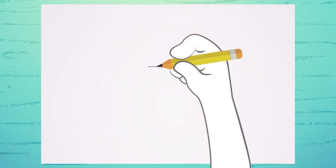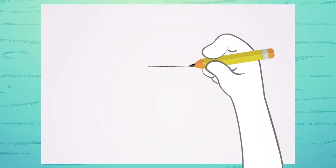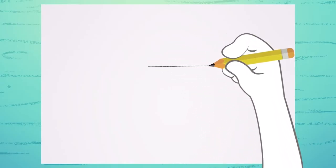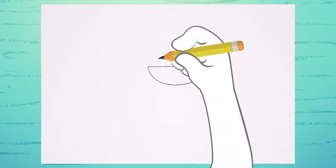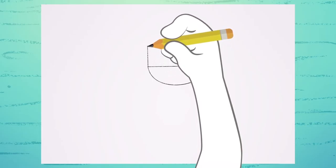First, draw the bowl like this. Watch! Draw a straight line, and then connect this dot to this one. Looks like a smile, huh?